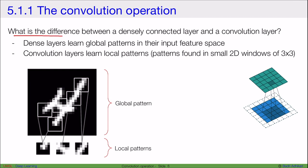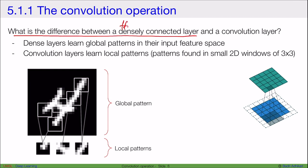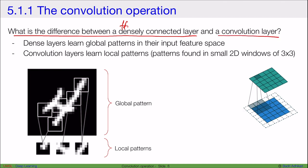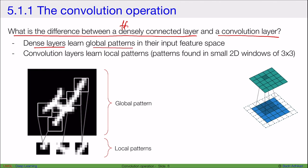What is the difference between a densely connected layer — a feed-forward layer — and a convolutional layer in a neural network? Dense layers are regular feed-forward neural networks. Dense layers learn global patterns in their input feature space.